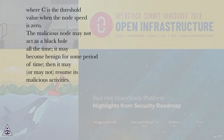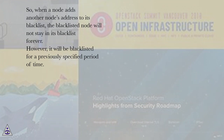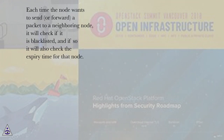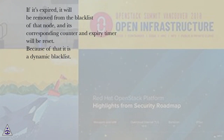The malicious node may not act as a black hole all the time; it may become benign for some period of time, then it may or may not resume its malicious activities. So, when a node adds another node's address to its blacklist, the blacklisted node will not stay in its blacklist forever. However, it will be blacklisted for a previously specified period of time. When a node is added to another node's blacklist, not only the address is added but also the expiry time for that node to be released from the blacklist. The blacklisted node expiry time is computed using equation 2. Each time the node wants to send or forward a packet to a neighboring node, it will check if it is blacklisted, and if so it will also check the expiry time. If expired, it will be removed from the blacklist and its corresponding counter and expiry timer will be reset. Because of this, it is a dynamic blacklist.